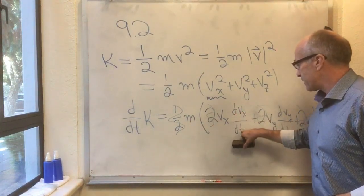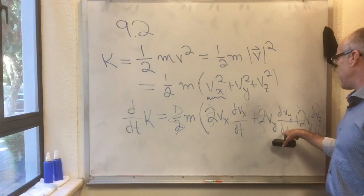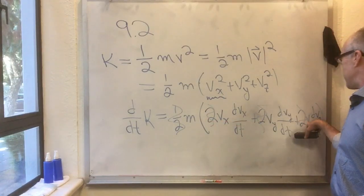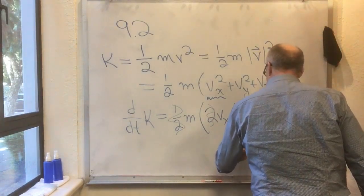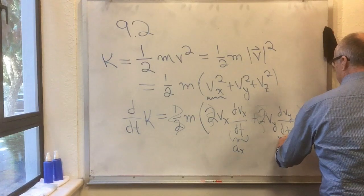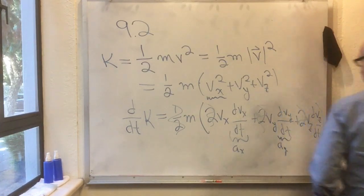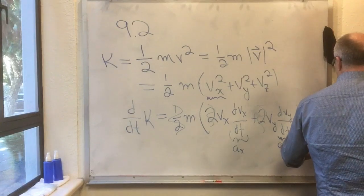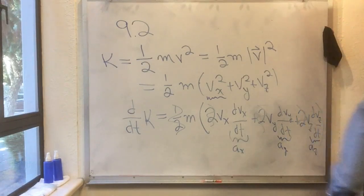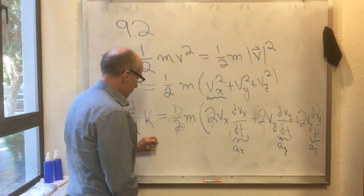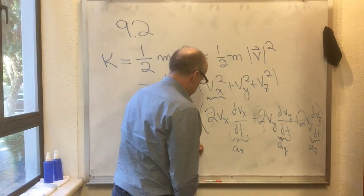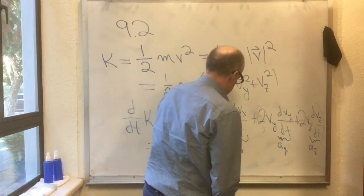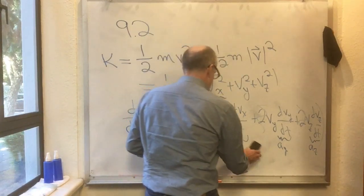And I'm left with mVx dVx/dt plus mVy dVy/dt plus mVz dVz/dt. But dVx/dt—we have a name for that, we call that ax. And dVy/dt we call ay, and dVz/dt we call az. So I can write all this as Vx times max plus Vy times may plus Vz times maz.